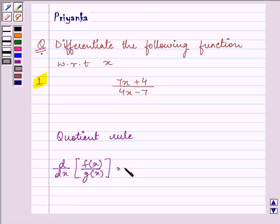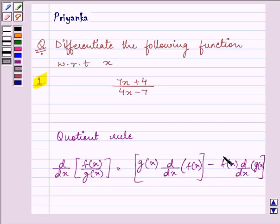Here, the formula is gx multiplied by the derivative of fx minus fx multiplied by the derivative of gx, the whole divided by gx the whole square.